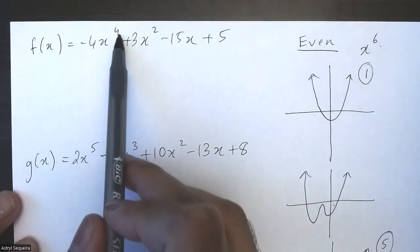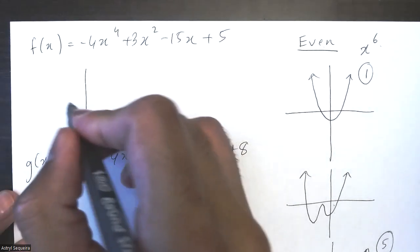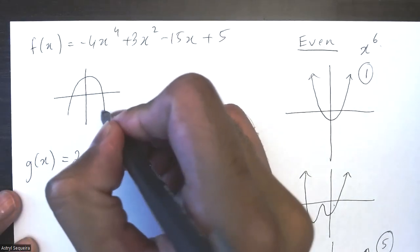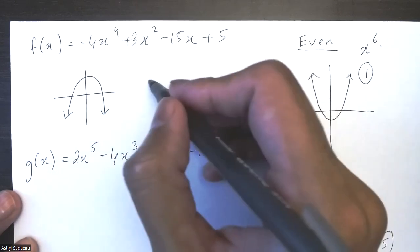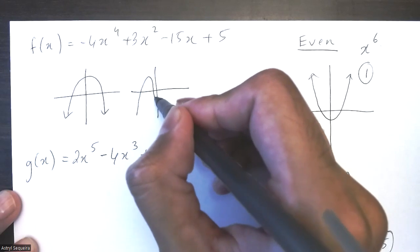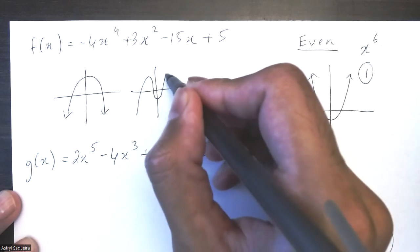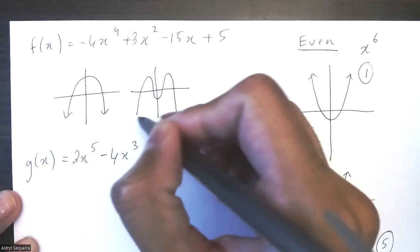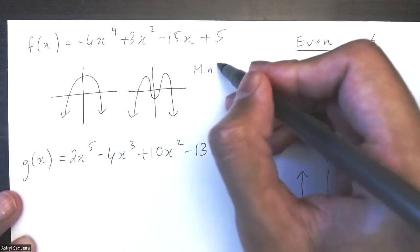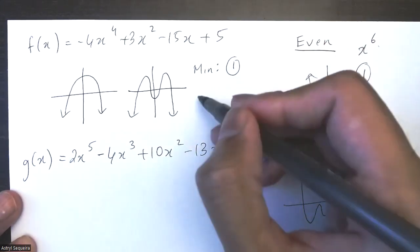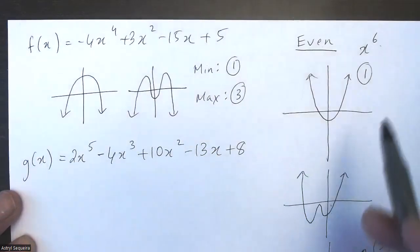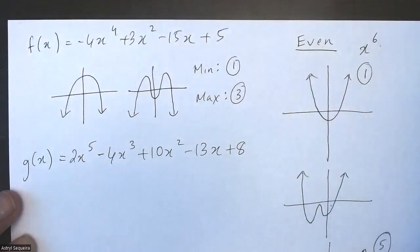My degree here is four. So I know that my minimum number of turning points is one, and my maximum number of turning points will be one less than the degree, which is three. So min number of turning points is one, max is three. This is consistent with what we learned about even functions.